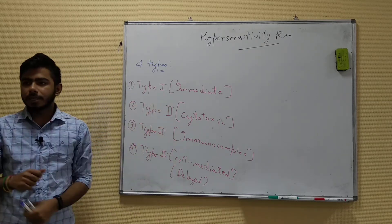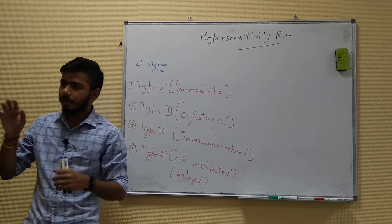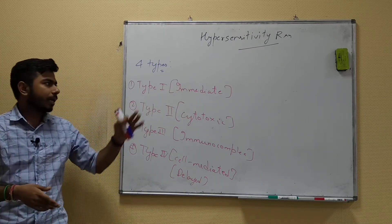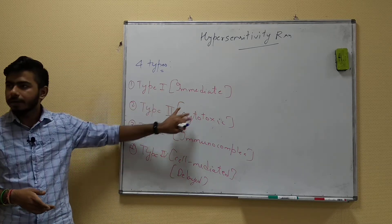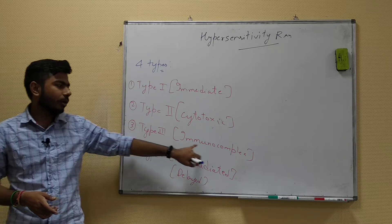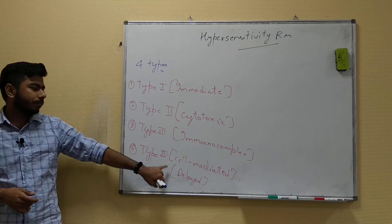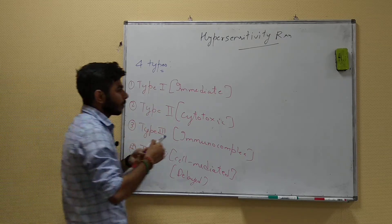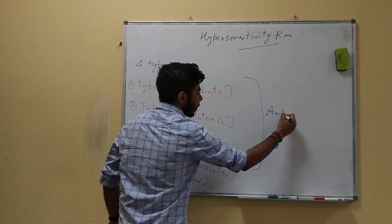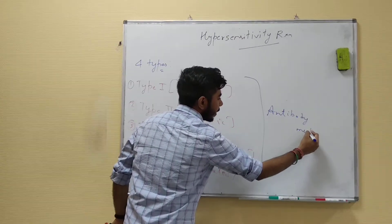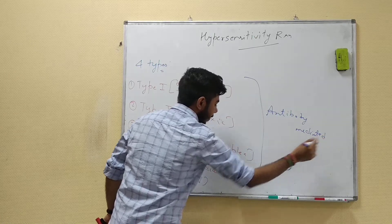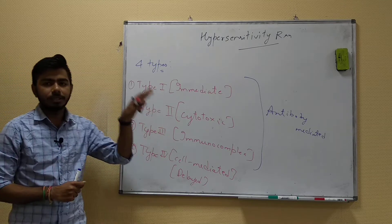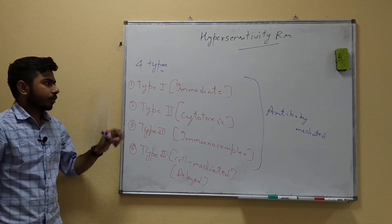To recap: there are four kinds of hypersensitivity reactions. Type 1 is immediate; type 2 is cytotoxic; type 3 is immune complex; type 4 is cell-mediated and also called delayed hypersensitivity. Types 1, 2, and 3 are antibody-mediated, while type 4 is cell-mediated. Now let's talk about type 1 hypersensitivity in detail.